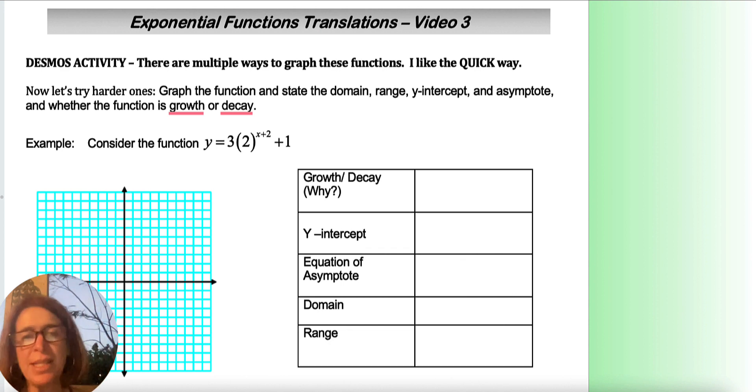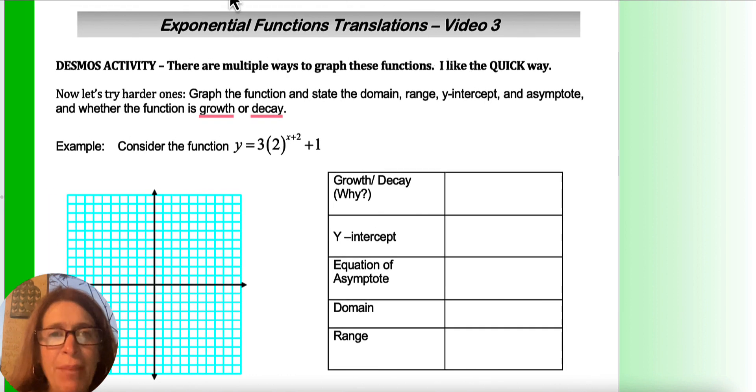This time we're going to be translating them, and while I could show you the same way we've been translating functions by writing a function rule for the changes, I actually find these to be easier without doing that. I like the quick way. Now, I'm going to show you the translated way so you can understand why I like this way better, but you need a parent graph, and unfortunately y equals b to the x is the parent and there's no numbers associated with it.